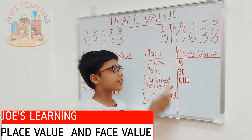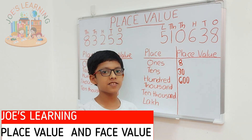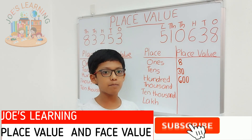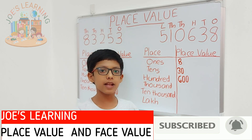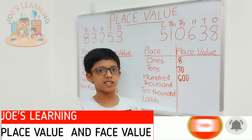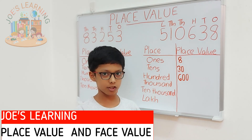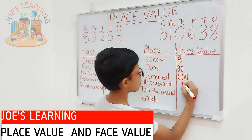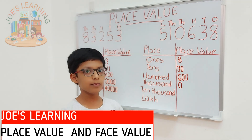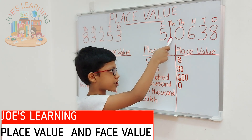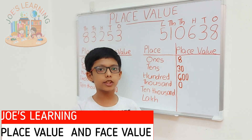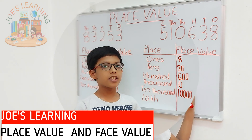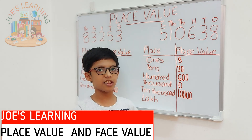Now, let's take a look at the thousands place. In the thousands place, there is 0. One thing to note is that whichever place or position 0 is, its place value will always be 0. Because 0 multiplied by 100 is 0, and 0 multiplied by 1,000 is also 0. So, 0's place value is always 0. Now, let's move on to the tens thousands place, that is 1. So, 1 multiplied by 10,000 equals 10,000. So, the place value of 1 is 10,000.